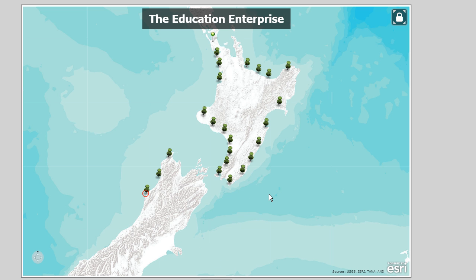And thinking about schools in a larger context, what about school bus routes? How do we figure out where those are and how they can be effectively planned and implemented?